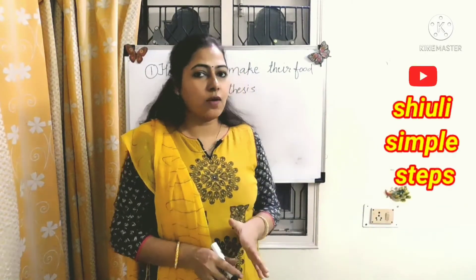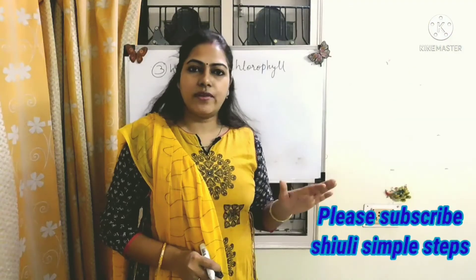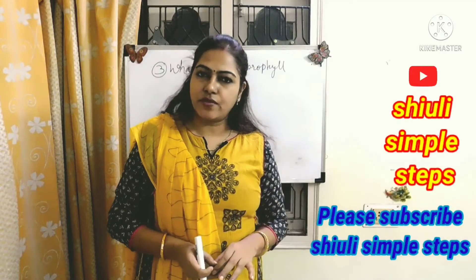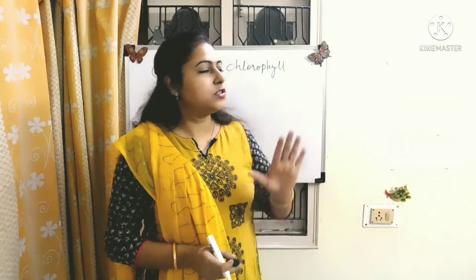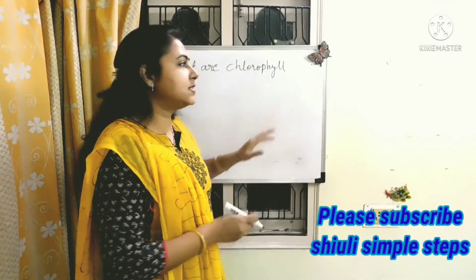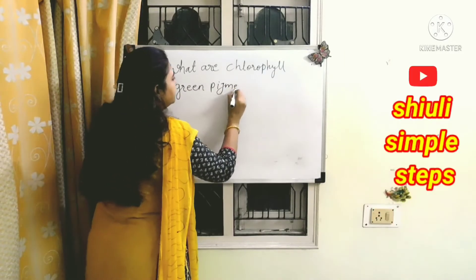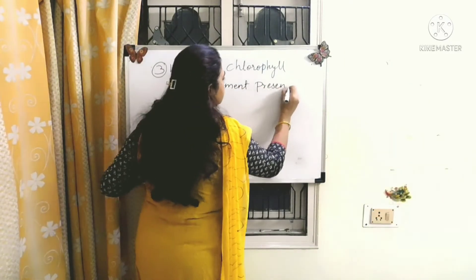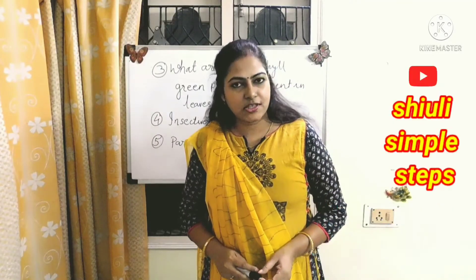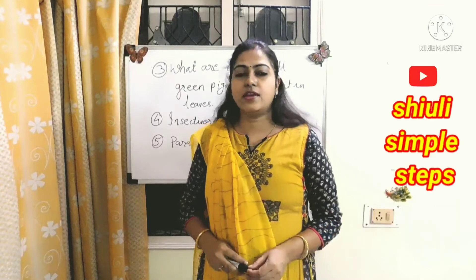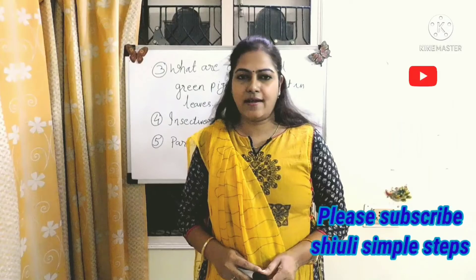Friends, today we have completed the topic: what are chlorophylls? Chlorophyll is a green pigment present in the leaves of the plant, which helps in the photosynthesis process. Hope you all understood today's topic, and if you have any queries please tell me in the comment box and I will give you the answers.